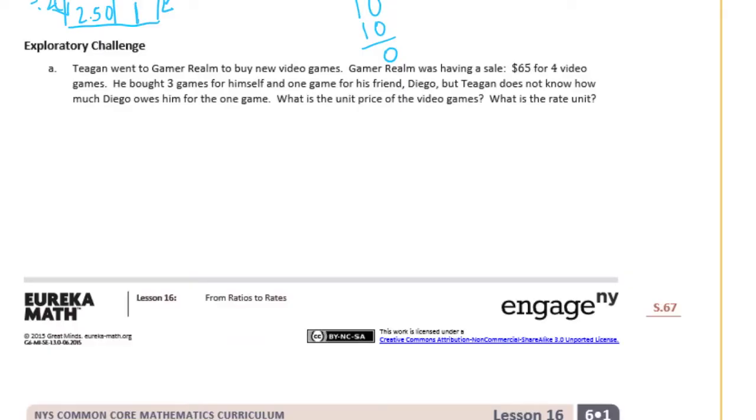Exploratory challenge. Tegan went to GamerRealm to buy new video games. GamerRealm was having a sale, $65 for 4 video games. He bought 3 games for himself and 1 game for his friend Diego. But Tegan does not know how much Diego owes him for 1 game. What is the unit price of the video game? What is the rate unit? There's some new vocab here that we'll talk about when we get to it. But first let's just figure out how much it would cost for Diego's game.